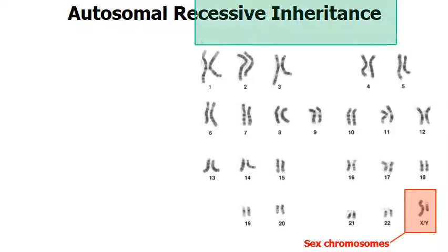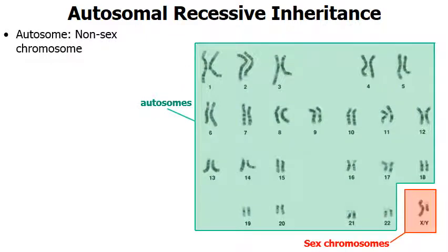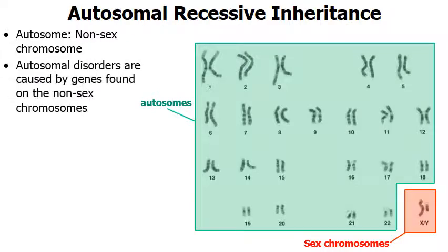The other 22 pairs of chromosomes are called autosomes, and this is where the word 'autosomal' in the title comes from. An autosome is a non-sex chromosome, meaning there are no genes that influence gender — those genes are found on the sex chromosomes. So an autosomal disorder is a disorder caused by a gene found somewhere in the 22 autosomes.